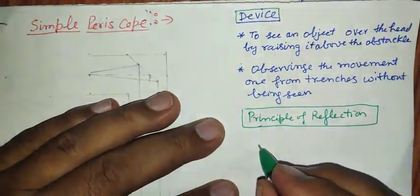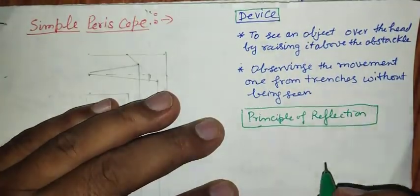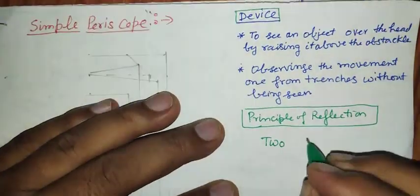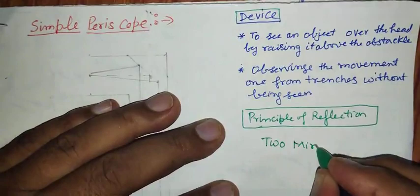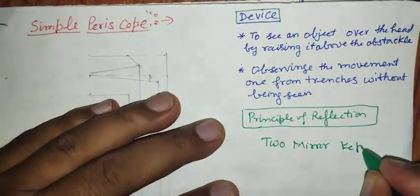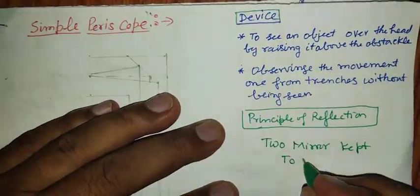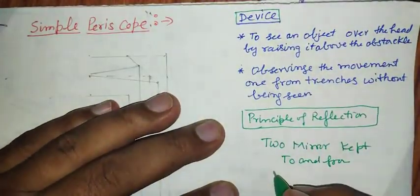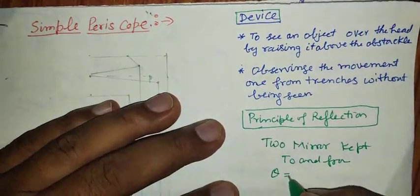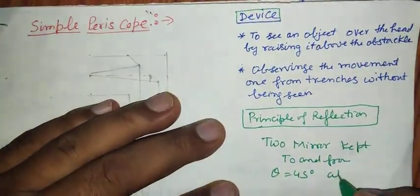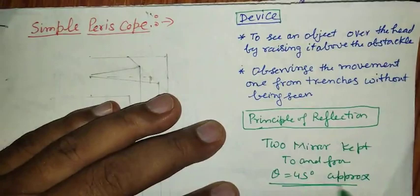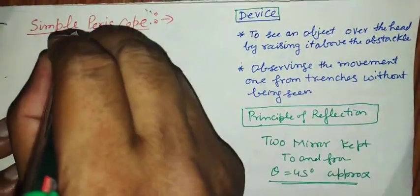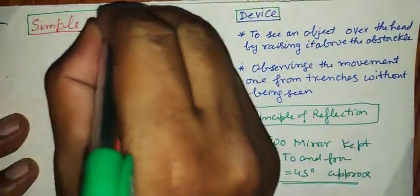When two mirrors are kept to and fro, both inclined at 45 degrees approximately, if a device is made, that is called a periscope.